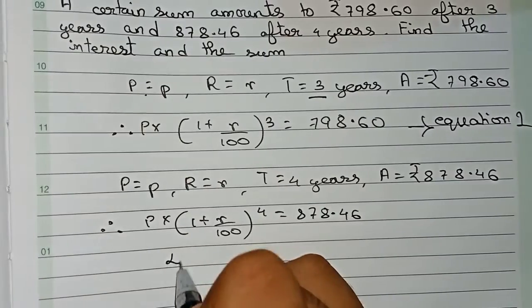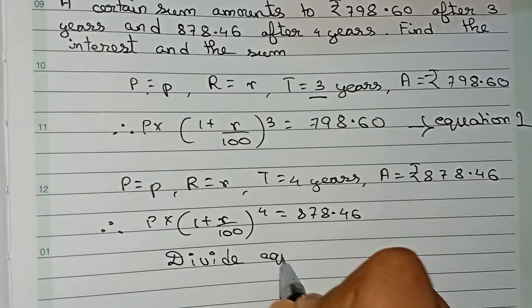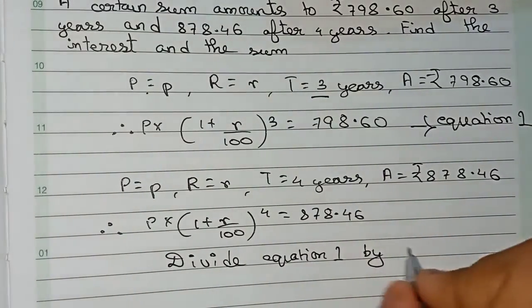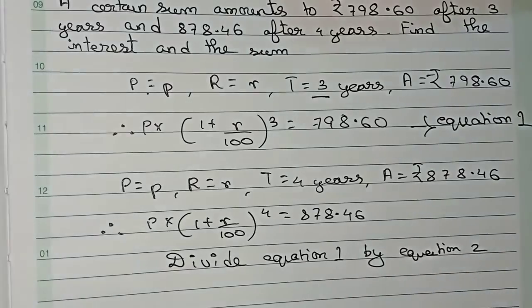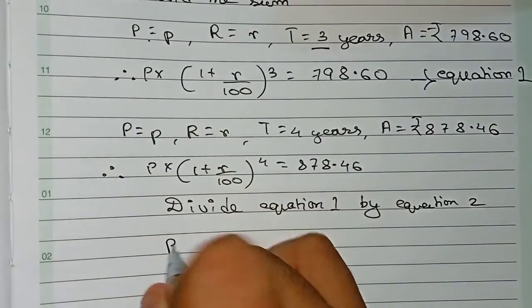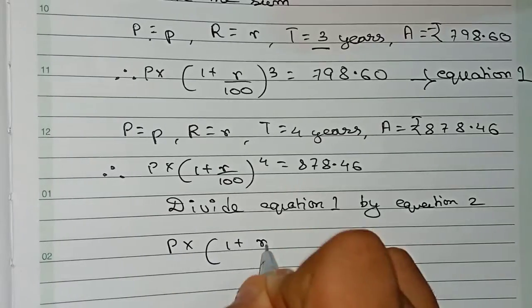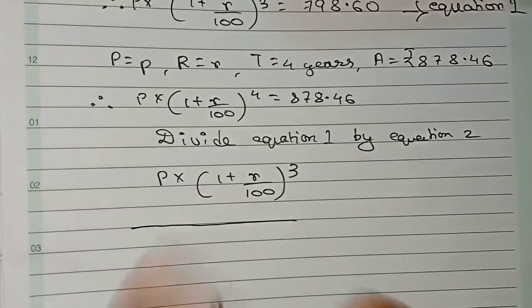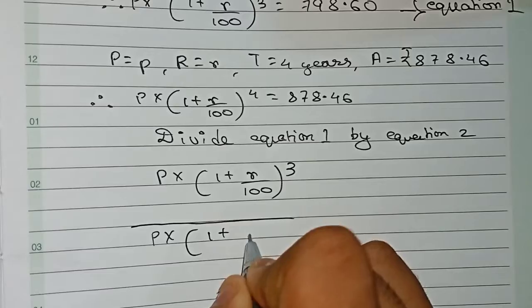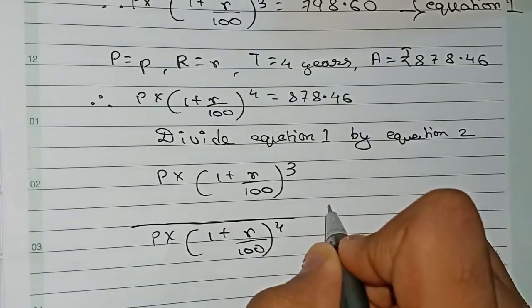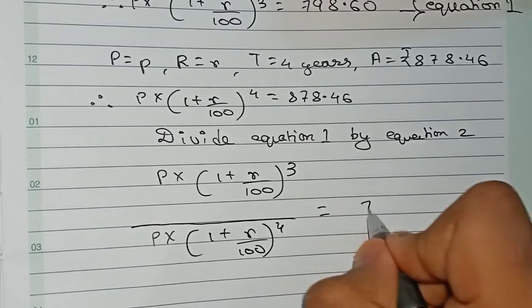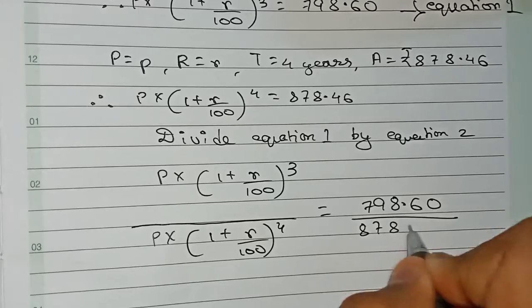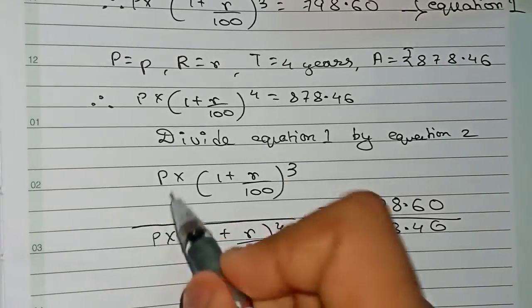Now we divide equation one by equation two. So we get: P into (1 + r/100) to the power 3, divided by P into (1 + r/100) to the power 4, equals 798.60 divided by 878.46. We cancel the principal P from both sides.